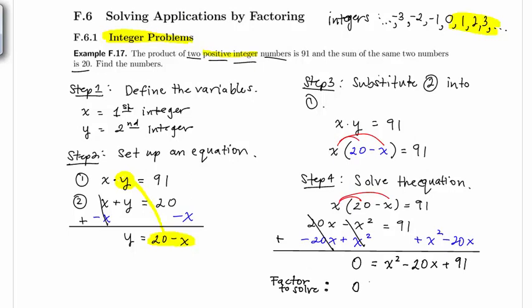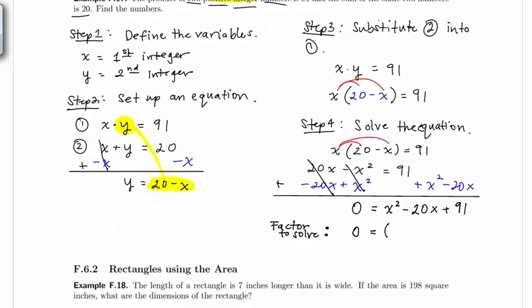So I would have zero equals, factoring this into two binomials. Two factors of 91 that add up to be minus 20 would be minus 13 and minus 7. Using the zero product property, this means that x minus 13 would equal 0, x minus 7 equal to 0. This would imply that x is equal to 13 or x is equal to 7.